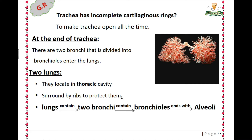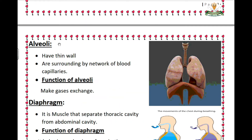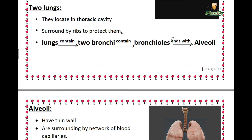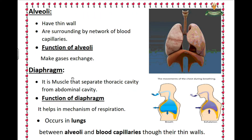The lungs contain two bronchi, which contain bronchioles, and these end with alveoli. What are the alveoli? Alveoli have a thin wall and are surrounded by blood capillaries. The function — the job — of the alveoli is to make gas exchange between oxygen and carbon dioxide.